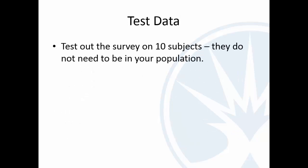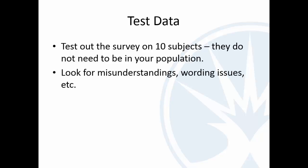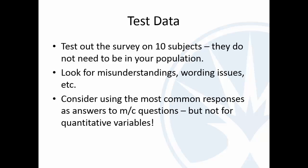For your test data, you're going to test it out on 10 subjects. These can be friends or family or whatever. If they're very different from your actual population, the results might not make much sense, but these don't need to be randomly selected. This is very casual — just trying to see if your survey works. You need to record that data and include it in your Part 2 submission. What you're looking for is: did they understand the questions? Were there wording issues? You could also consider using the most common responses for your multiple-choice questions, but again, not for quantitative variables.